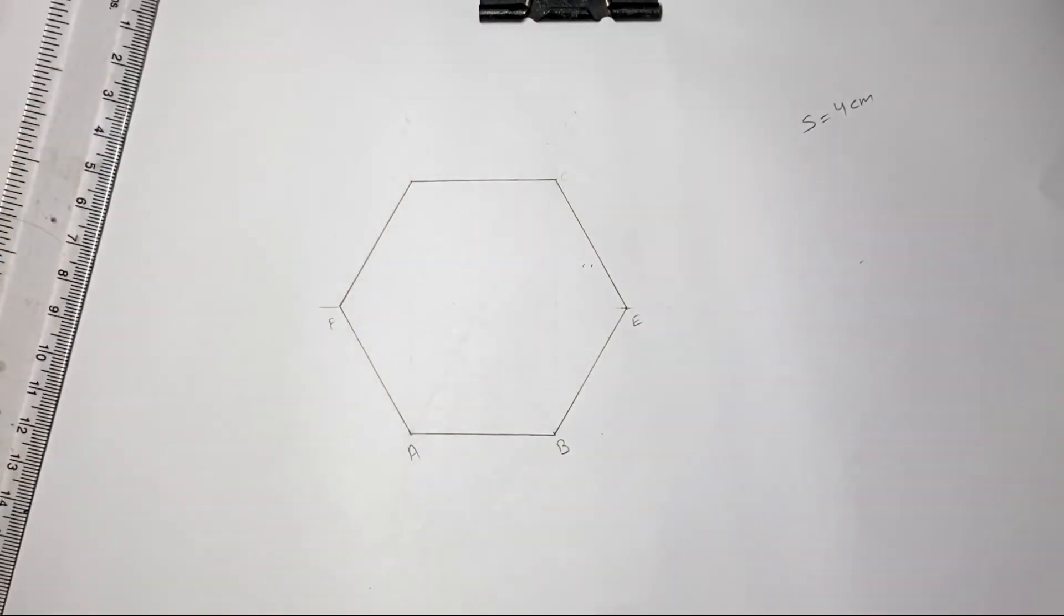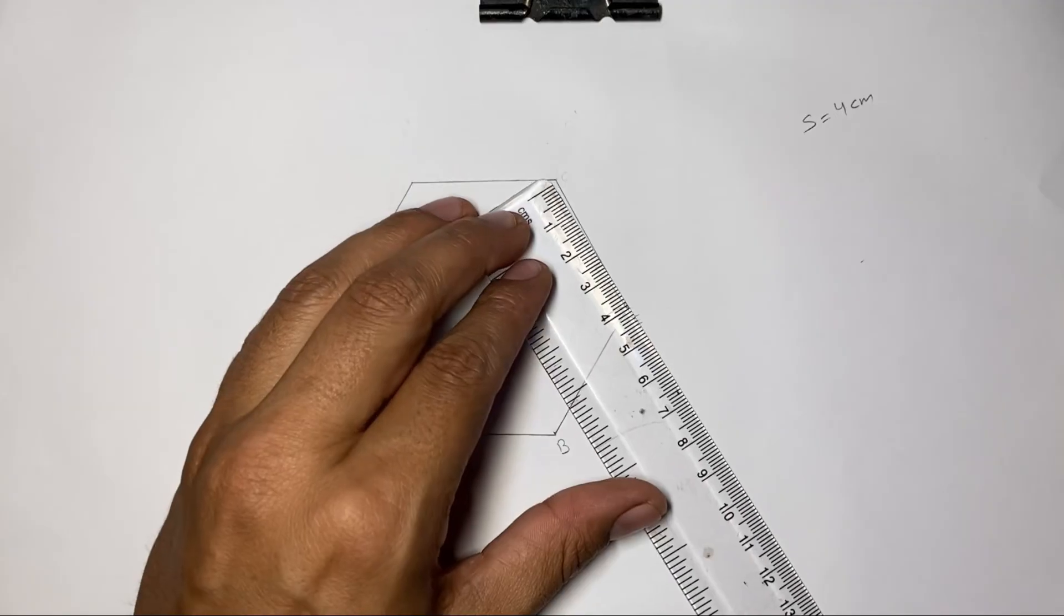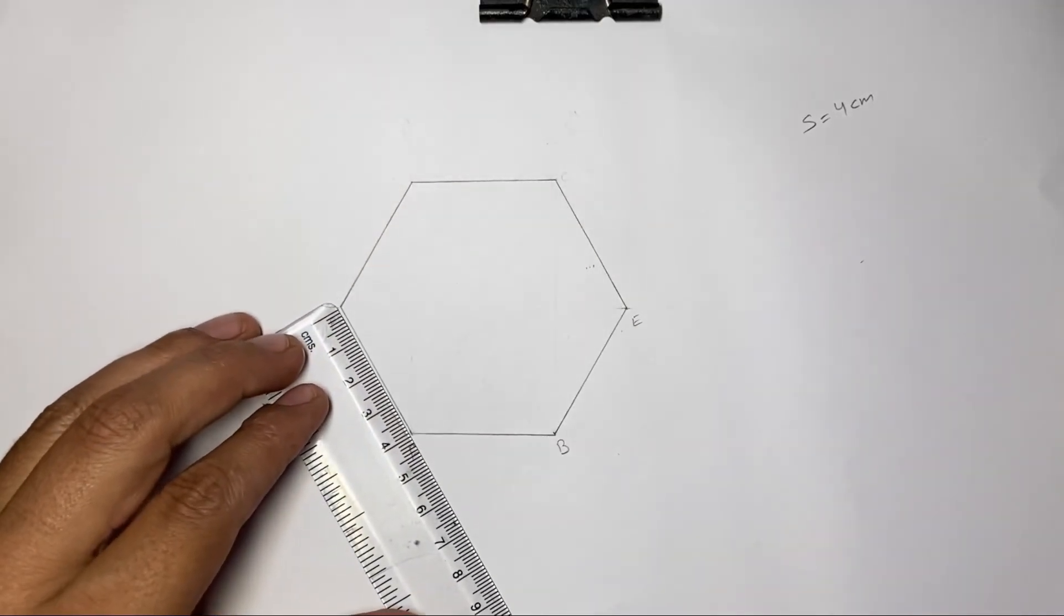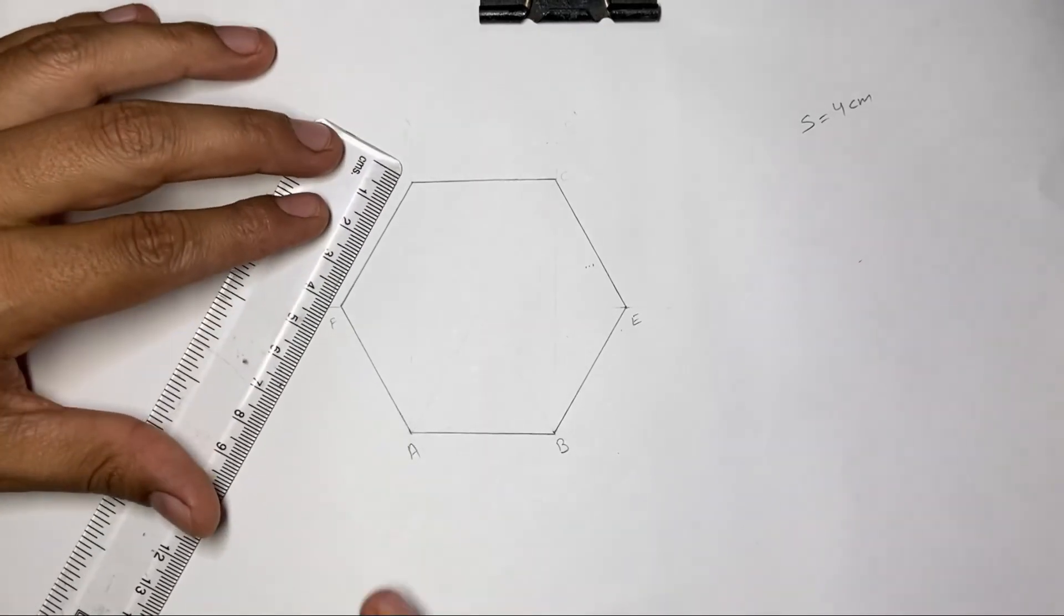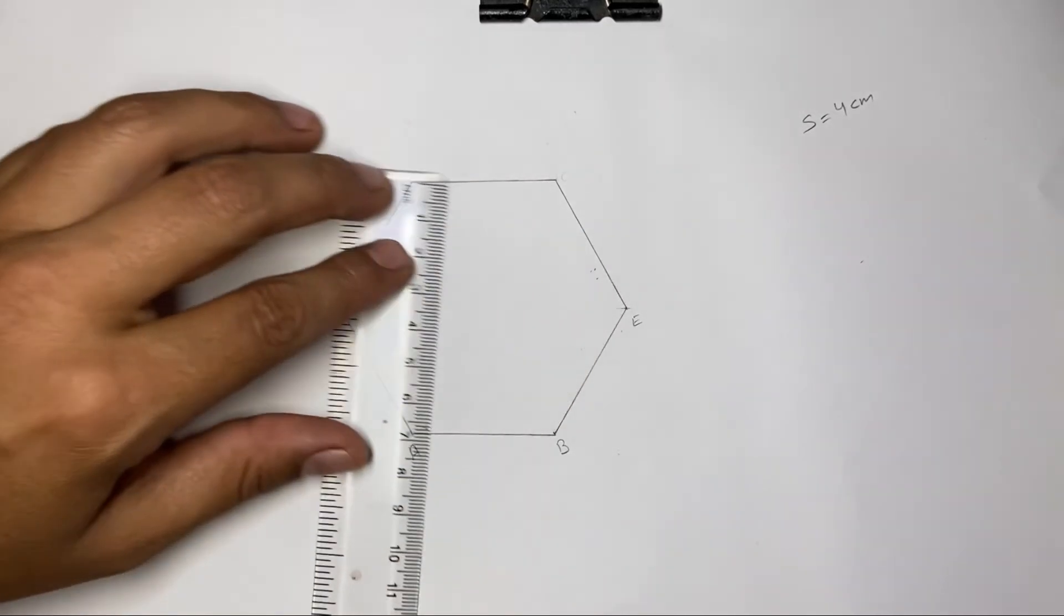That's it guys, we have our perfect hexagon ready without a compass. You can verify the sides of the hexagon. Each side should be 4 centimeters in length. So if each side is 4 centimeters, then we can say that it's a perfect hexagon.